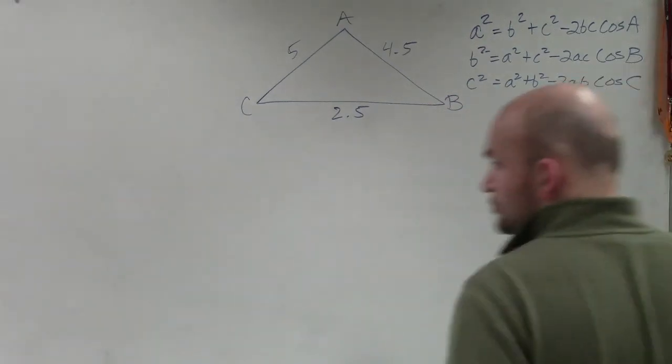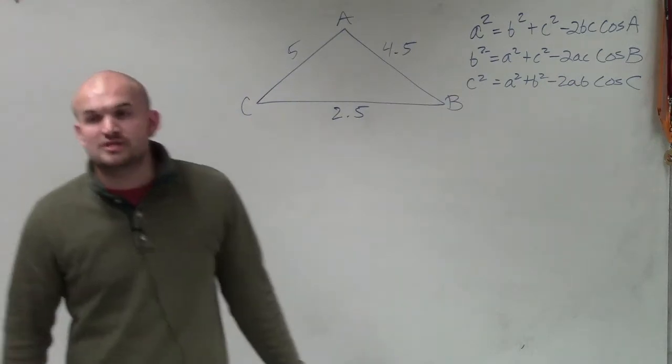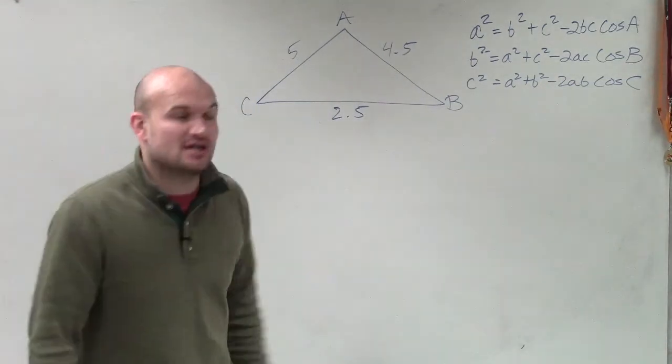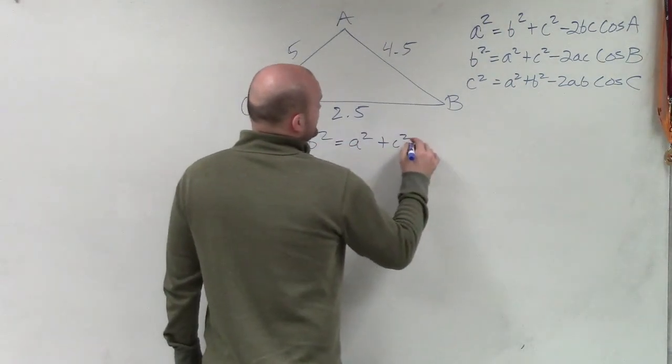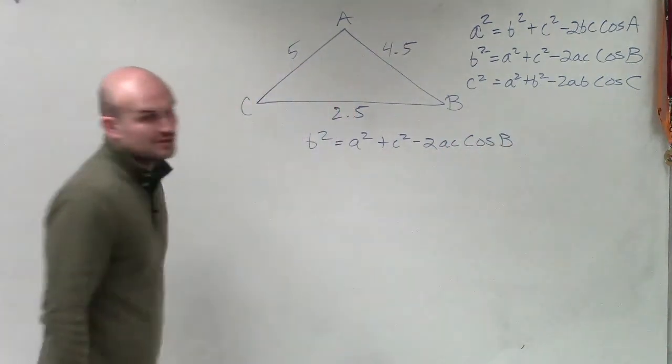When we look at this, we want to determine what is going to have the largest side or what is going to produce the largest angle. In this case, we can see that b is going to produce the longest angle. So I'll rewrite the formula for b, which is b² = a² + c² - 2ac times the cosine of b.